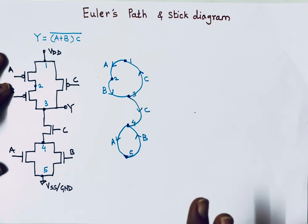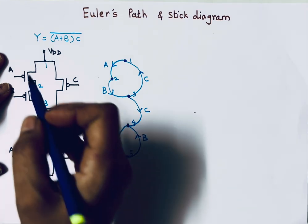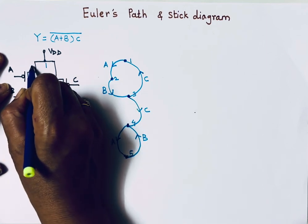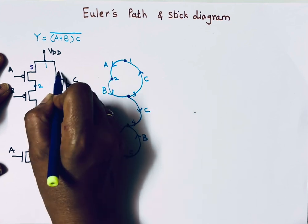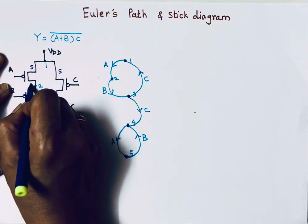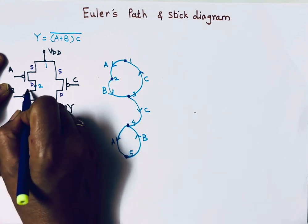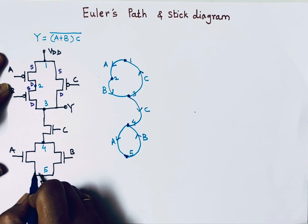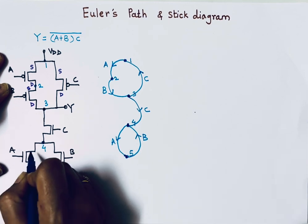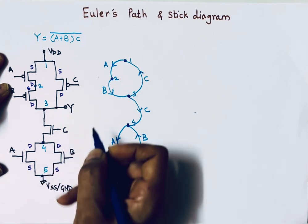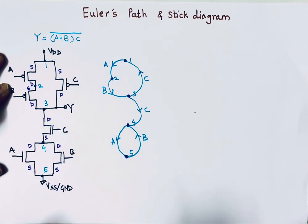Now let's see how to draw the stick diagram. First, we mark the terminals of each MOSFET. For the PMOS transistors: this is the source terminal, this is also a source terminal — source goes to VDD — and this is the drain. Similarly for the N-channel MOSFET: source, drain, source, and drain.